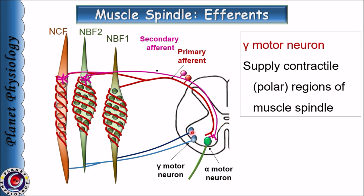Now let us study the efferents of the muscle spindle. Gamma motor neurons of the anterior horn cells of the spinal cord form efferent fibers to the muscle spindle. They constitute about 30 percent of the fibers in the ventral root and innervate the contractile regions of the muscle spindle — that is, the polar ends or the peripheral parts of the muscle spindle.